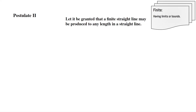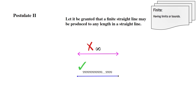Postulate 2: Let it be granted that a finite straight line may be produced to any length in a straight line. So right here we have an infinite line — this does not have a set value. Right here we have a line segment. This line segment has an extremely high value, but even if the number is extremely large, it still can be produced to a length in a straight line.